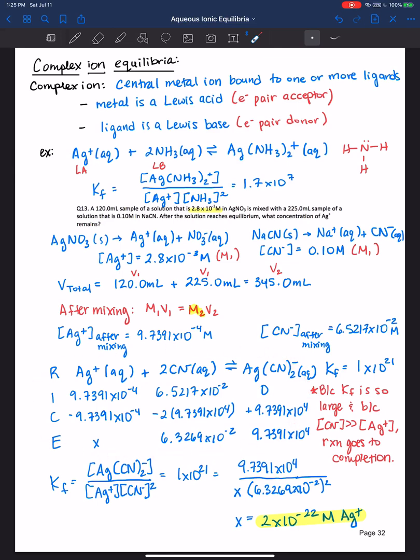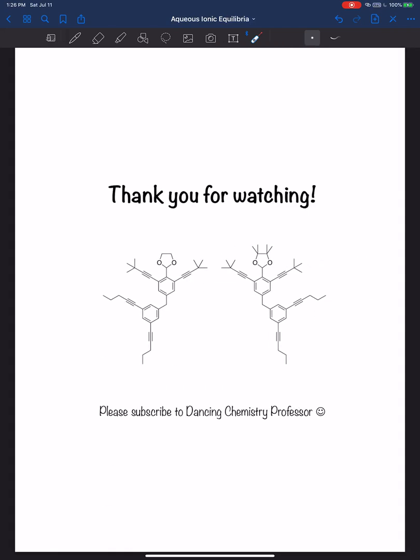We set up our ICE table knowing full well that it went to completion. However, we wanted to put x there for silver so we can know exactly how much would be left over after the formation of the silver cyanide complex reaches equilibrium. All right thank you all for watching and I'll see you next time.